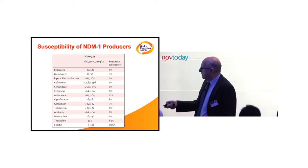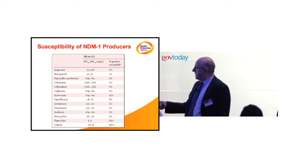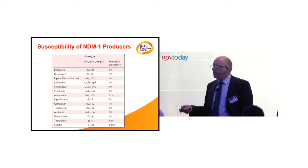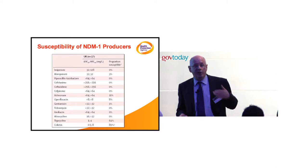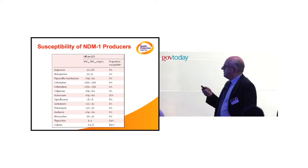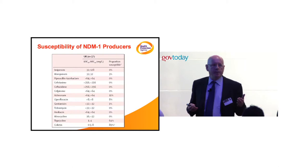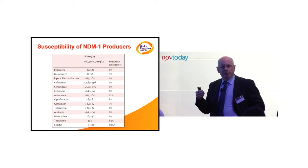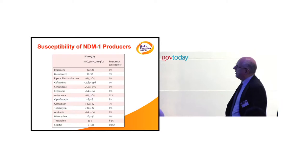We need to look at alternatives to antibiotics — out of necessity, as we may simply not have antibiotics to use in the future — and also as a strategy to reduce antibiotic use, which will reduce selective pressure and at least slow the rate of resistance increase. Increasingly, people should be thinking in terms of non-antibiotic antimicrobials, and one such example to consider is silver.